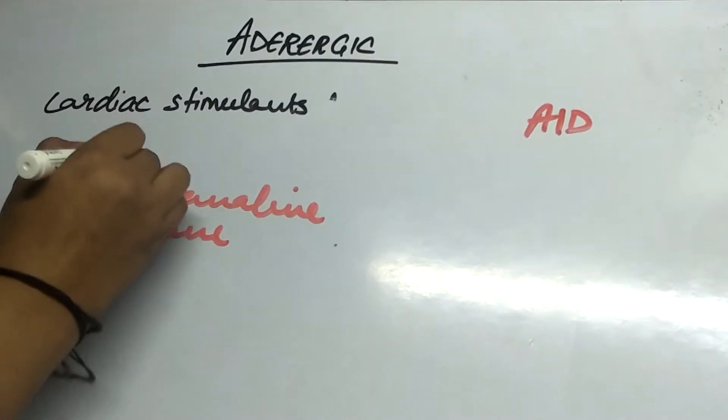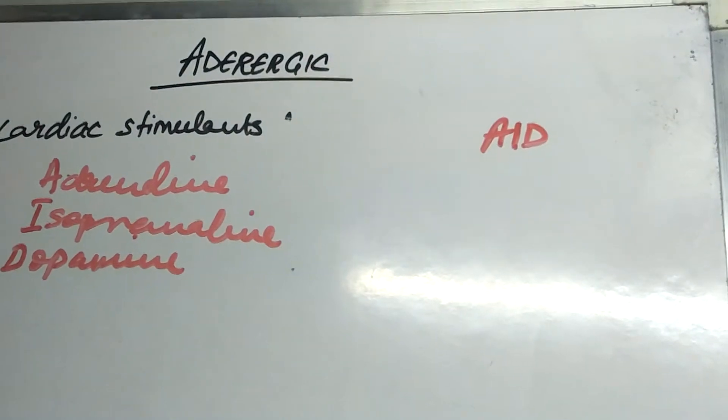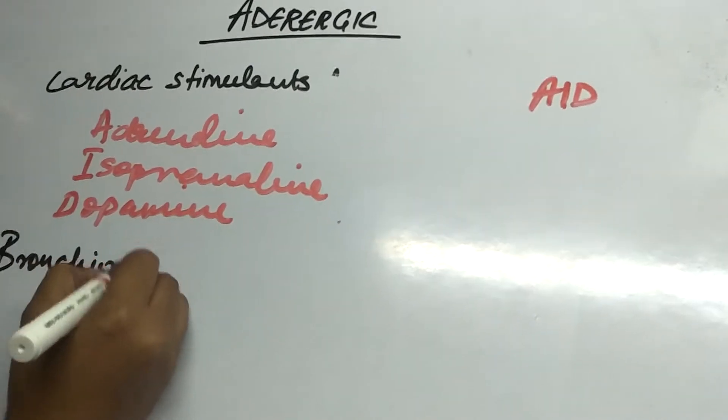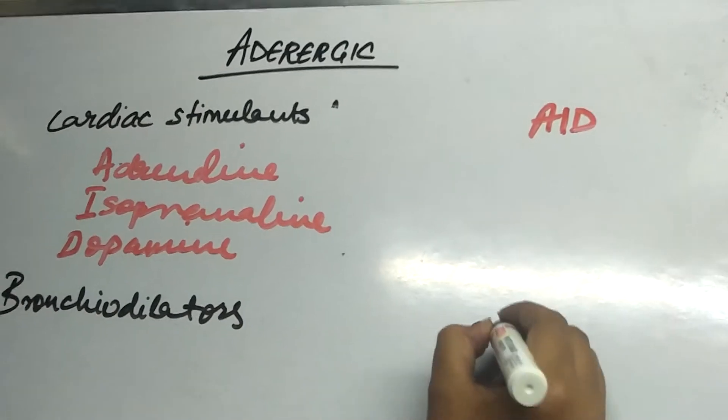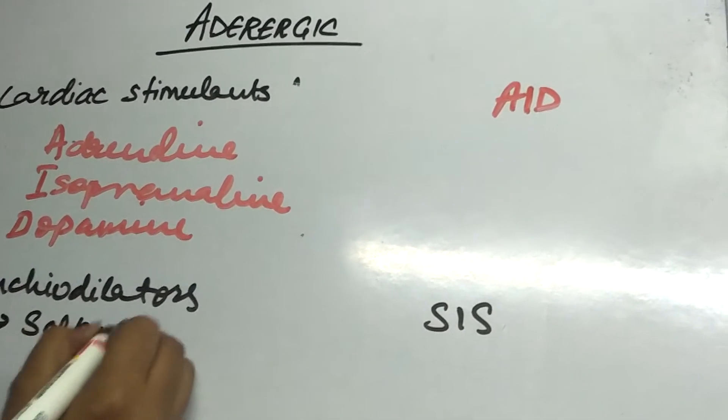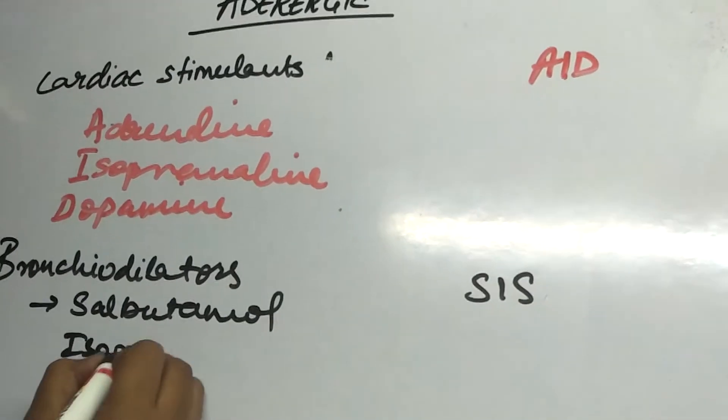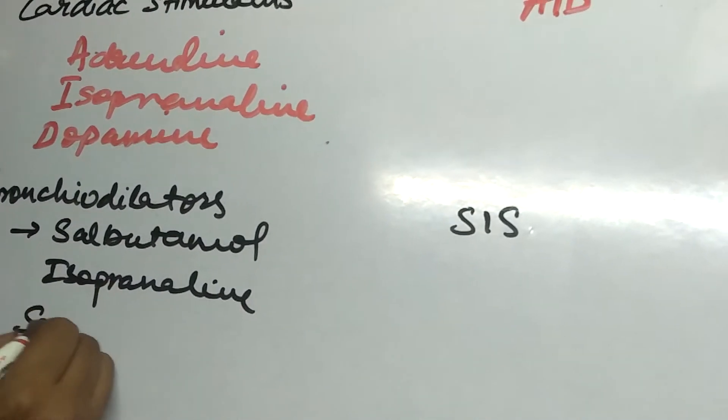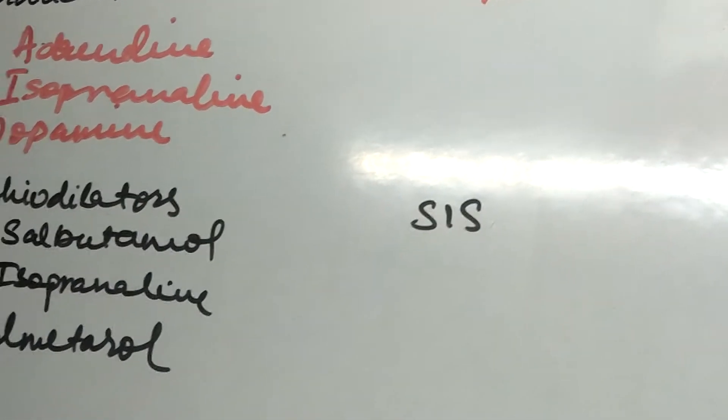Next class is bronchodilators. The mnemonic is SIS. From S salbutamol, I for isoprenaline which is same, then salmeterol.